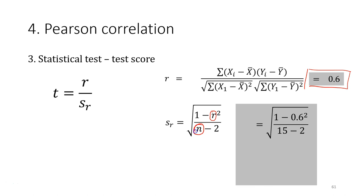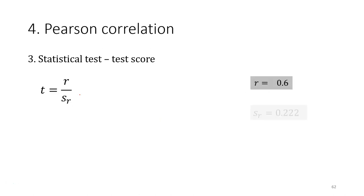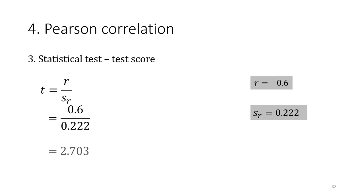For the standard error formula, you need the correlation coefficient and n. For our example, the correlation coefficient is 0.6 and n is 15. Just substitute the values into the formula: square the correlation coefficient, compute 1 minus that squared value, then divide by the degrees of freedom which is 15 minus 2 equals 13. After solving the mathematics, we obtain the standard error for the correlation coefficient. There are only two values involved in this t-test, so you can substitute them in and calculate the t-score.